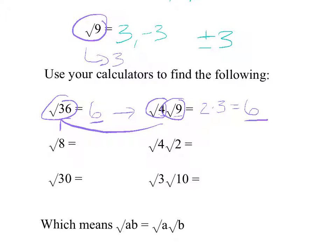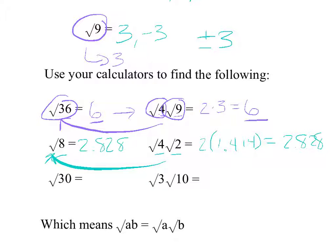The square root of 8 on a calculator gives 2.828 and so on—it's irrational and keeps going without repeating. The square root of 4 is 2, and the square root of 2 is 1.414. Multiply those: 2 times 1.414 equals 2.828. Same answer! And 4 times 2 is 8, confirming that splitting works here too.